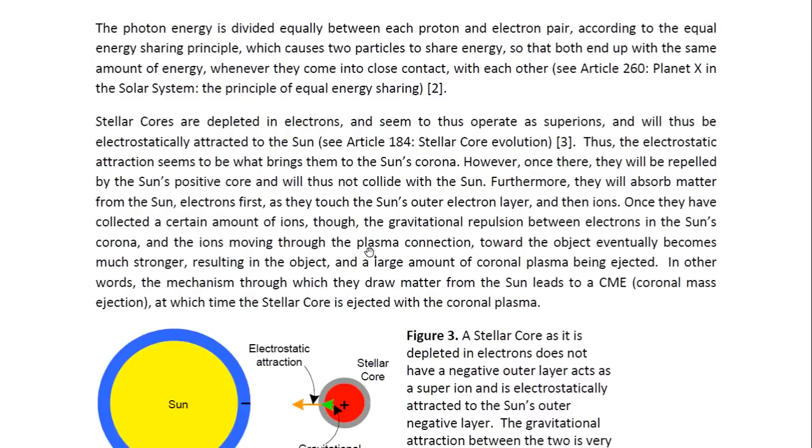Stellar cores are depleted in electrons and seem to thus operate as super ions. And will thus be electrostatically attracted to the sun. You may look at article 184 entitled Stellar core evolution for more details on that. Thus the electrostatic attraction seems to be what brings them to the sun's corona. However, once there they will be repelled by the sun's positive core and will thus not collide with the sun.